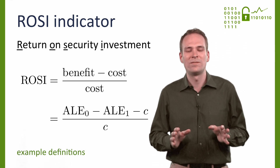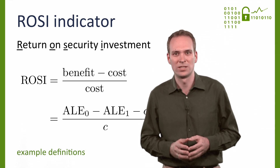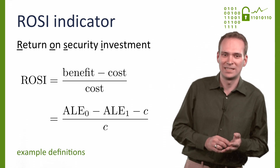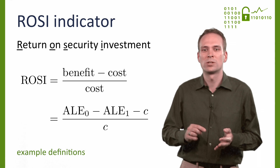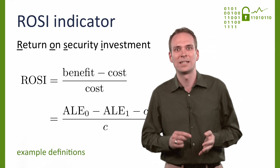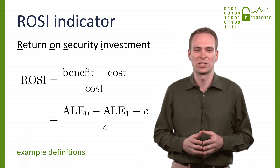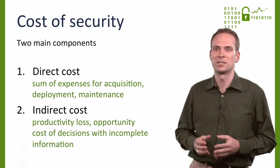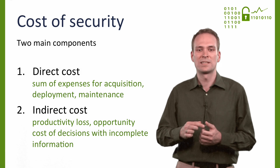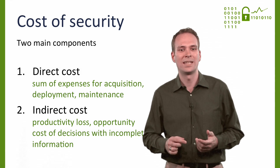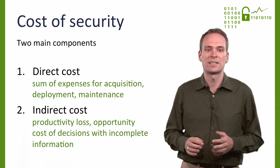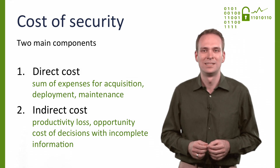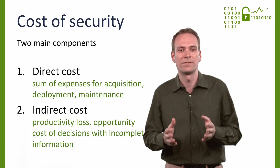Keep in mind that ROSI values calculated with different definitions are not comparable on the same scale. Calculating the indicator is usually quite simple. It is much more complicated to precisely quantify its inputs. What contributes to the cost of a security investment? Summing up the expenses for acquisition, development, and maintenance of security controls gives us a lower bound, because this reflects only the direct cost. However, many security controls have significant indirect costs.